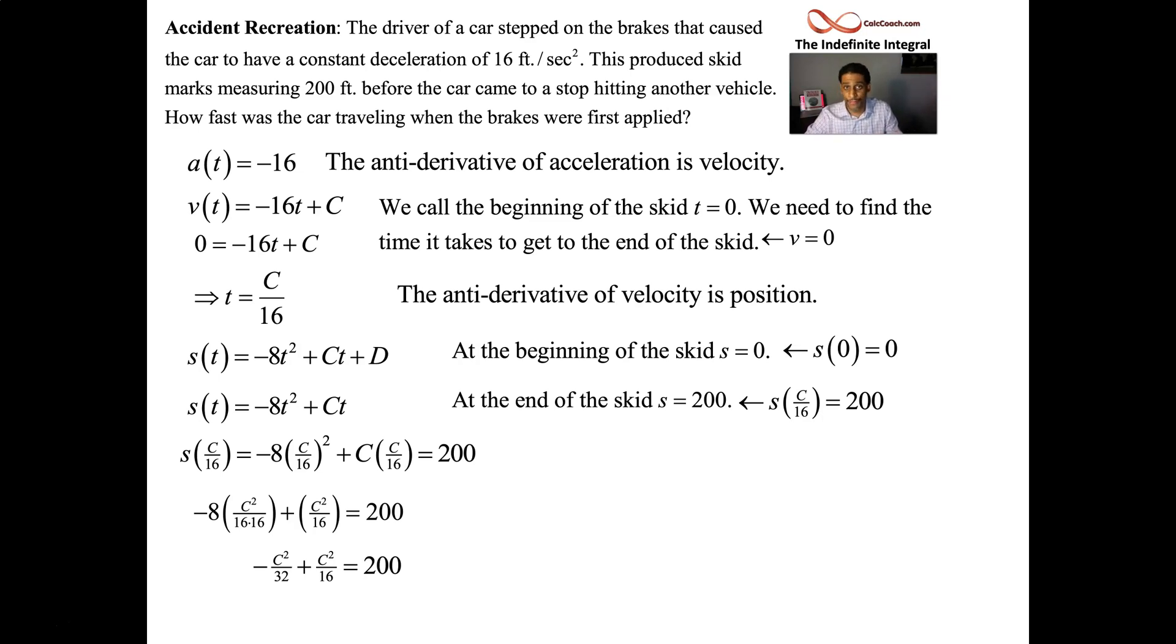And so we could say, basically we can just take a square root. If you have negative C squared over 32 and positive C squared over 16, those two fractions could be put together. And you really just have C squared over 32, positive. So multiply by 32, take a square root. And wow, that worked out nice. C is 80. These never work out nice. That's great. C is 80.